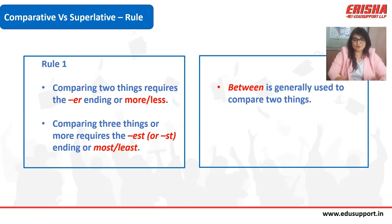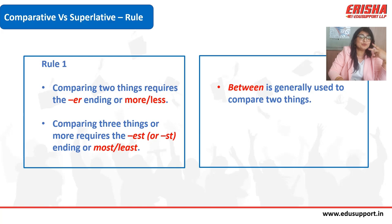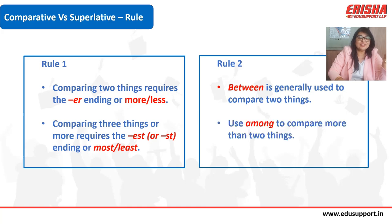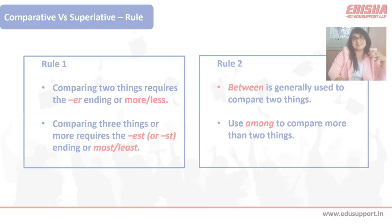We use 'between' when comparing two things. When talking about more than two things, we use 'among.' So 'among' is used to compare more than two things.